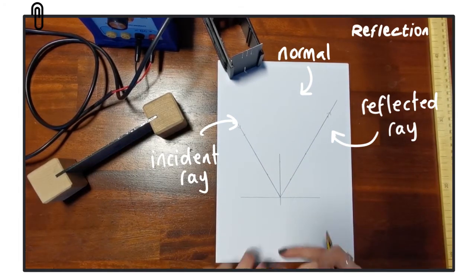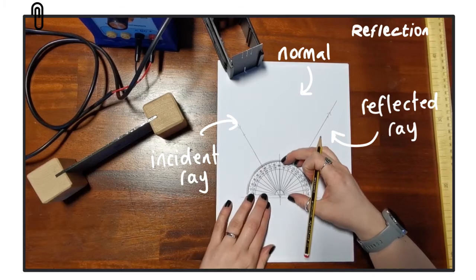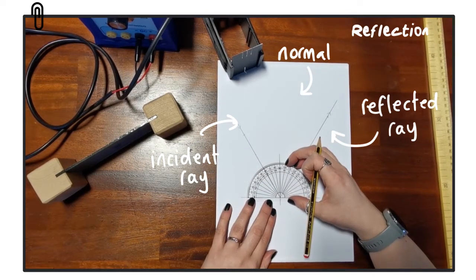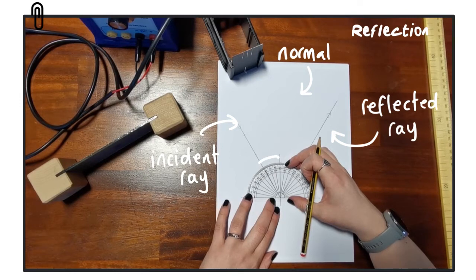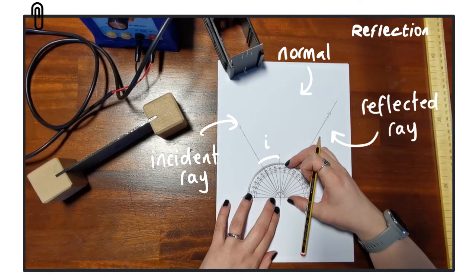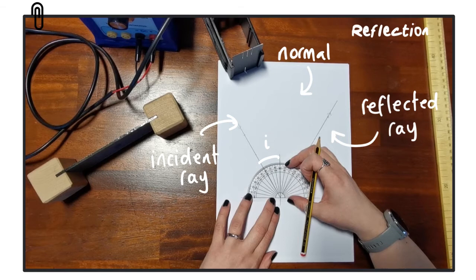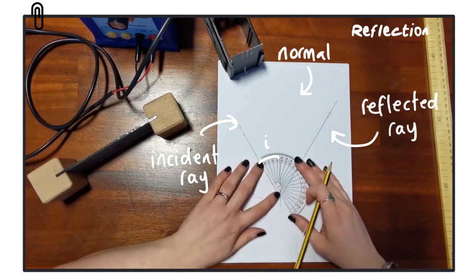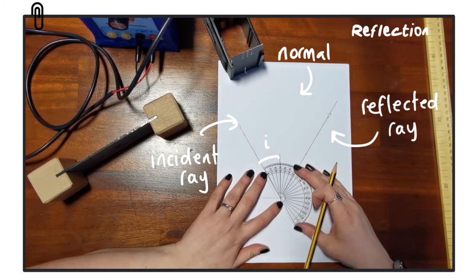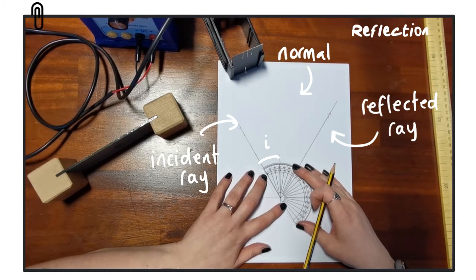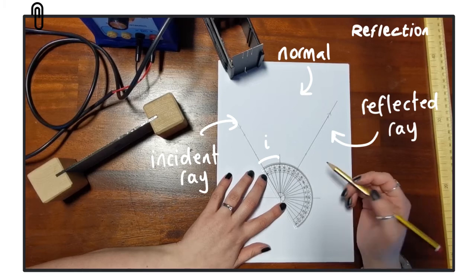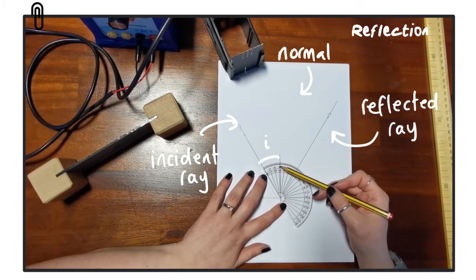So the key angles that we're interested in are the angle of incidence and the angle of reflection. The angle of incidence is between the incident ray and the normal. We normally label that as i. You can use your protractor, either line it up with the normal, or usually it's easier if you line it up so that the zero starts along the incident ray and then you can measure what the angle of incidence is.